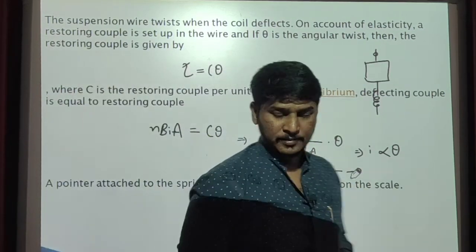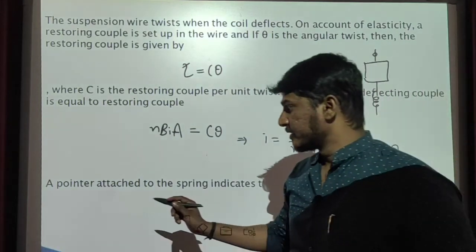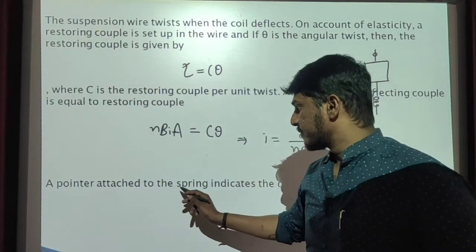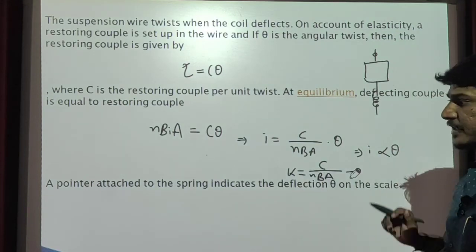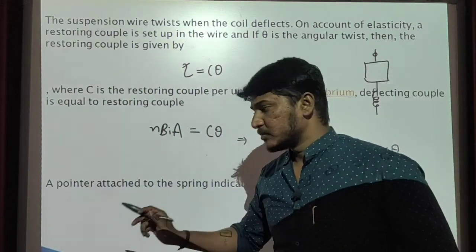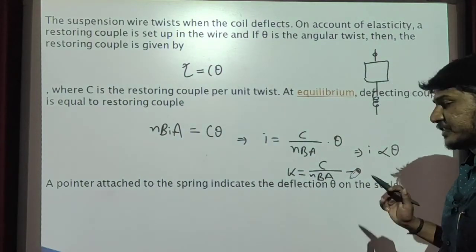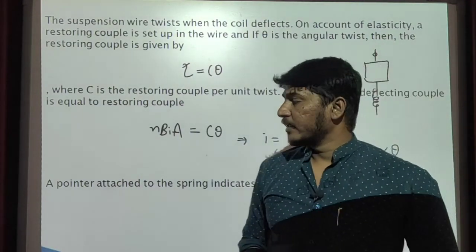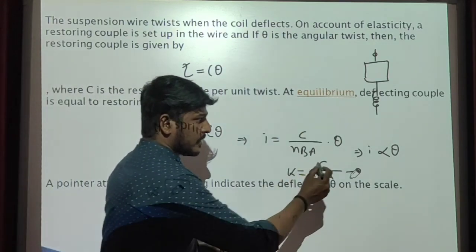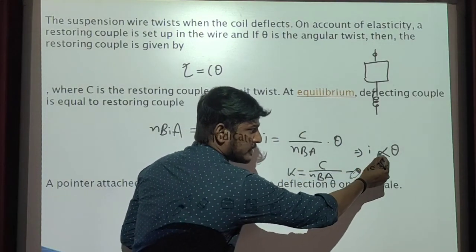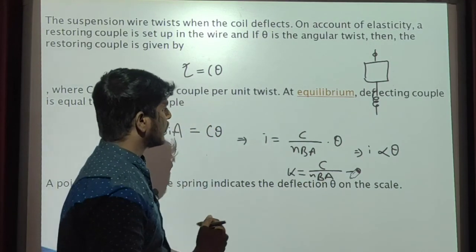A pointer attached to the spring indicates the deflection θ on the scale. From the theory, we observe that the current is directly proportional to the deflection.